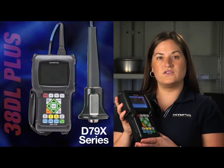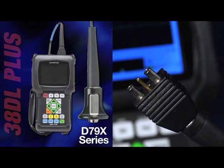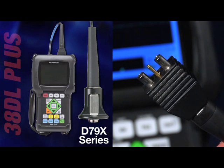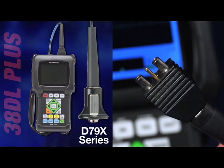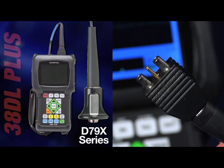Today we are going to discuss how to calibrate the 38DL Plus with a standard D790X series dual element transducer. These transducers have a center pin for probe recognition. Simply plugging them into the 38DL Plus allows the gauge to automatically recognize the transducer and recalls the default parameters for that probe.